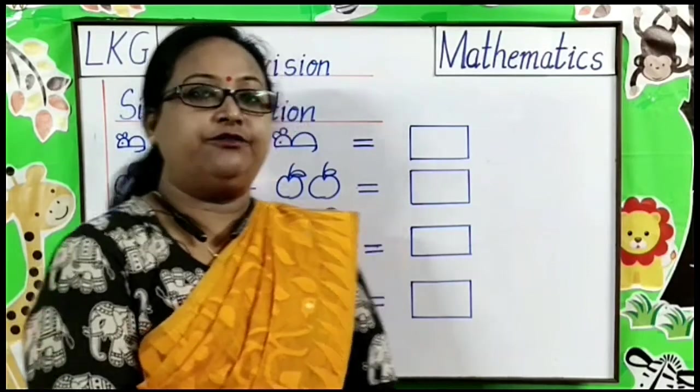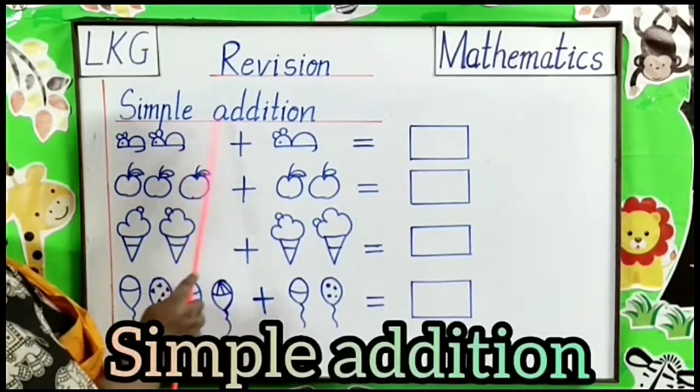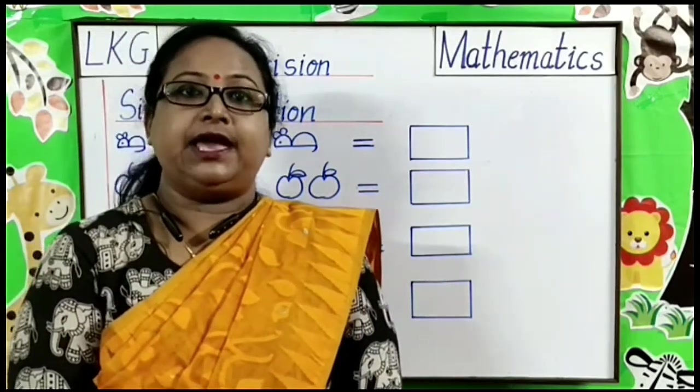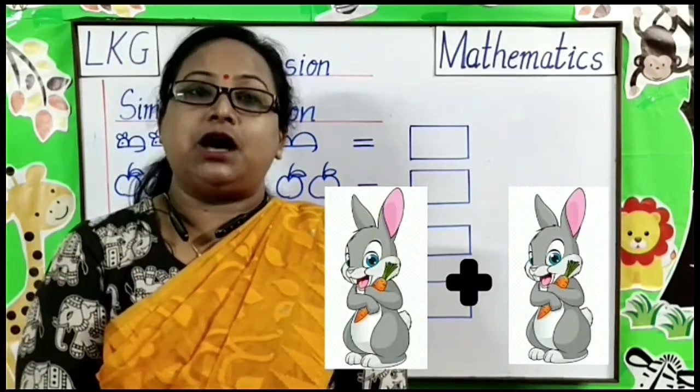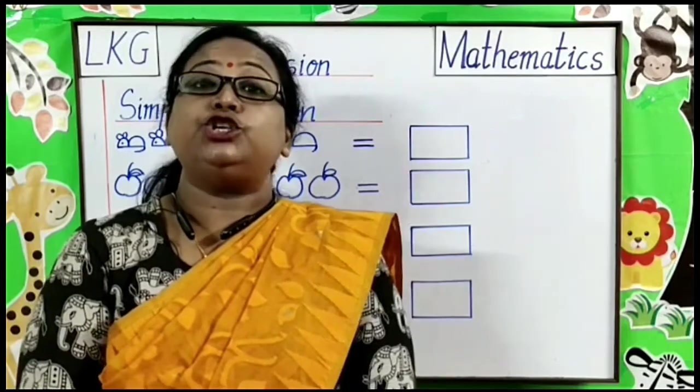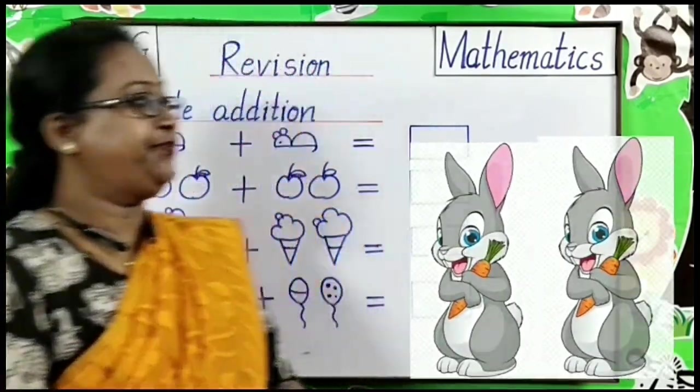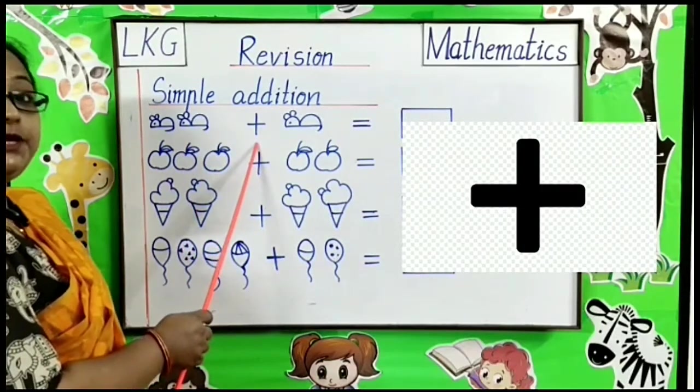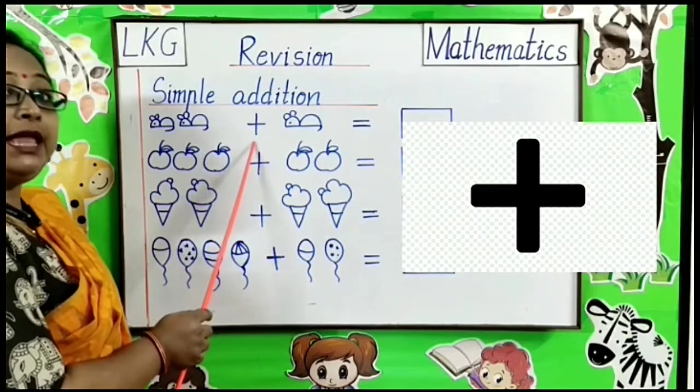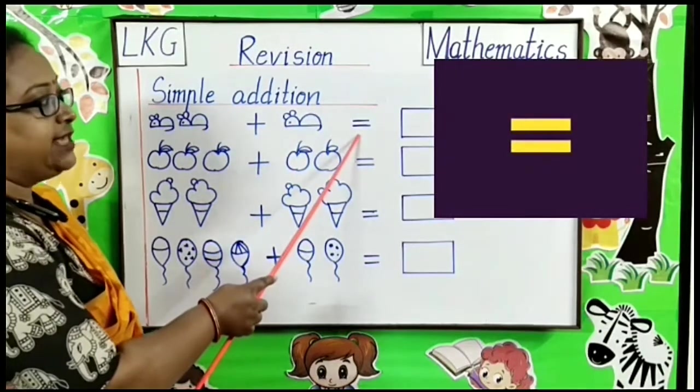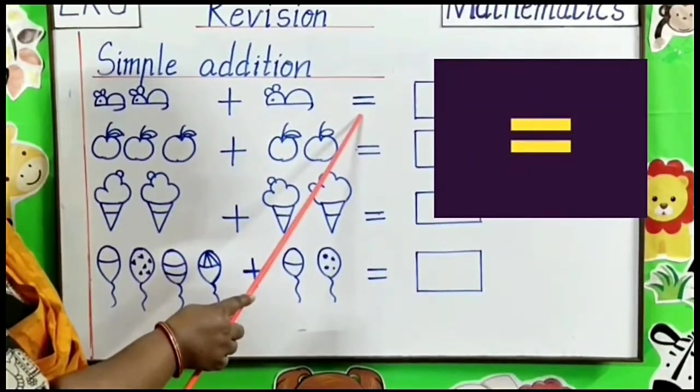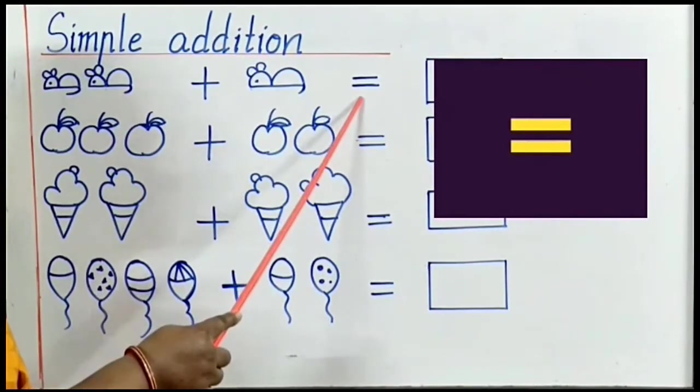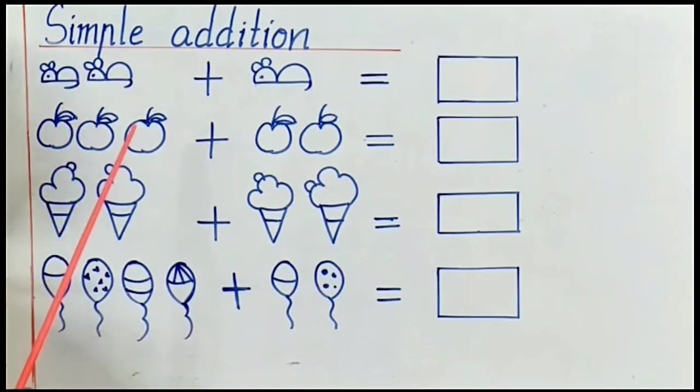The next topic for the revision is Simple Addition. As we all have learnt, Addition is Counting the Objects Together. For Addition, we use our special sign, that is called Plus Sign. And what sign is this? Do you remember? Very good. Equal sign.